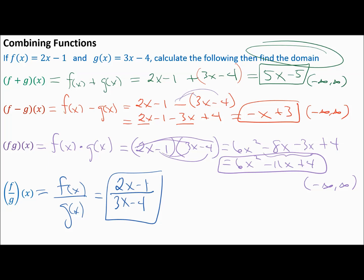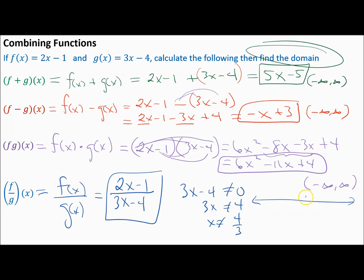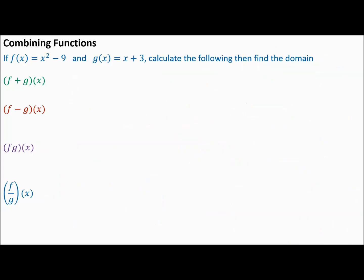The domain is not all real numbers because there's a variable in the denominator. Set the denominator not equal to zero: 3x minus 4 ≠ 0. Add 4 and divide by 3 — x cannot be 4/3. On the number line, x can be everything except 4/3, so the domain is negative infinity to 4/3 union 4/3 to infinity.